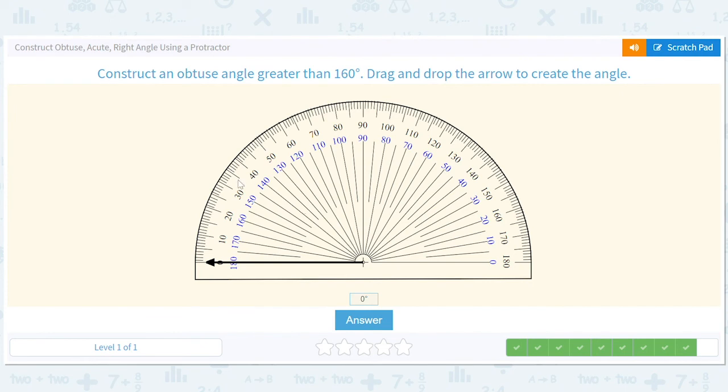Construct an obtuse angle greater than 160. So finally, we can't use a multiple of 40 for this one. They got us. Greater than 160, 160 wouldn't work because it's not greater than 160. Let's go with 170.